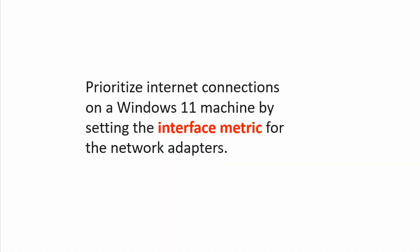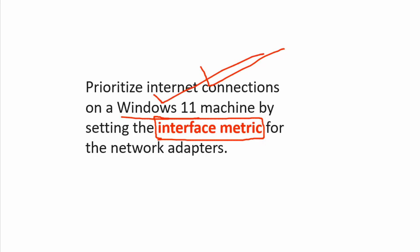Yes, that is correct. You can go ahead and prioritize the internet connections on a Windows 11 machine by setting the interface metric for the network adapters. It's not just true for Windows 11 — you can do it for Windows 10 as well and other Windows operating systems as well.